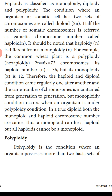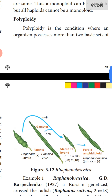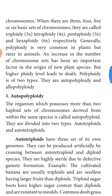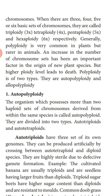Polyploidy is a condition where an organism possesses more than two basic sets of chromosomes. When three, four, five, or six sets are present, they are called triploidy, tetraploidy, pentaploidy, and hexaploidy respectively. Generally polyploidy is very common in plants but rarer in animals. An increase in the number of chromosome sets has been an important factor in the origin of new plant species, but higher ploidy levels lead to death. Polyploidy is of two types: auto polyploidy and allo polyploidy.